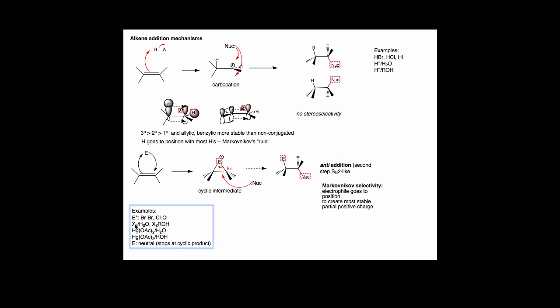Halogens can also act as the electrophile for the first step when either water or alcohol acts as the nucleophile. Mercury can act as the electrophile with either water or alcohol acting as the nucleophile.